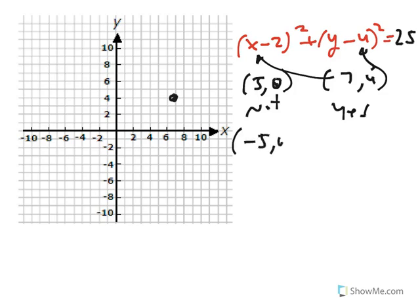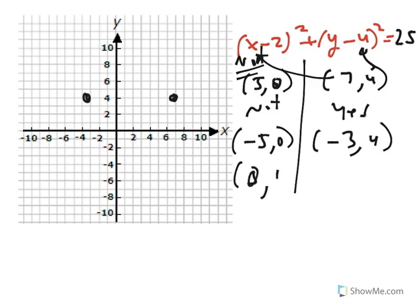So negative 5, 0 is not on it. But negative 3, 4 is, because negative 3 plugged into the equation would make negative 3 minus 2, it should be negative 5. And I can do the same thing with 0, negative 5. 0, 5 is not.